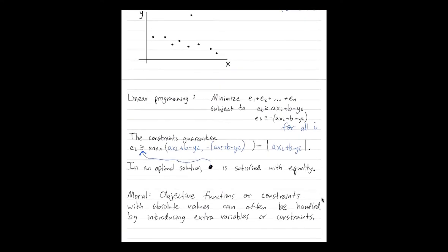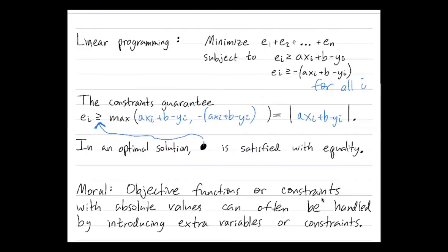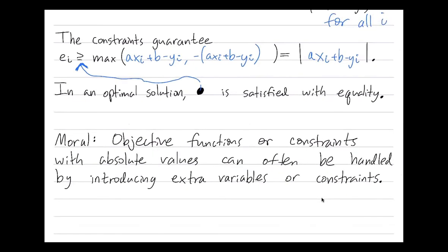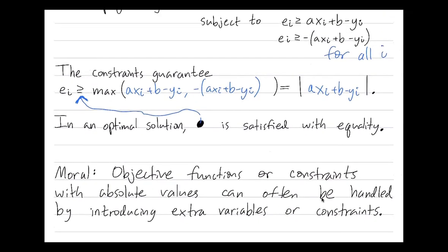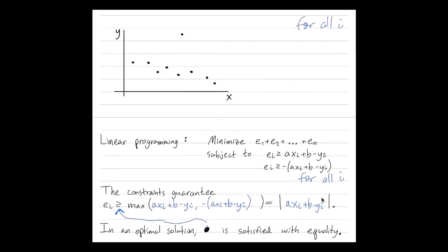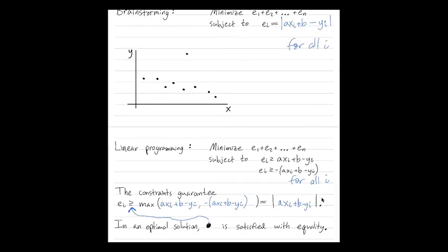Questions about that? To finish, the moral here is that objective functions or constraints with absolute values can often be handled in linear programming problems by introducing extra variables. So here are extra variables where these errors are extra constraints. We went from one equality constraint involving an absolute value to two inequality constraints with no absolute values.